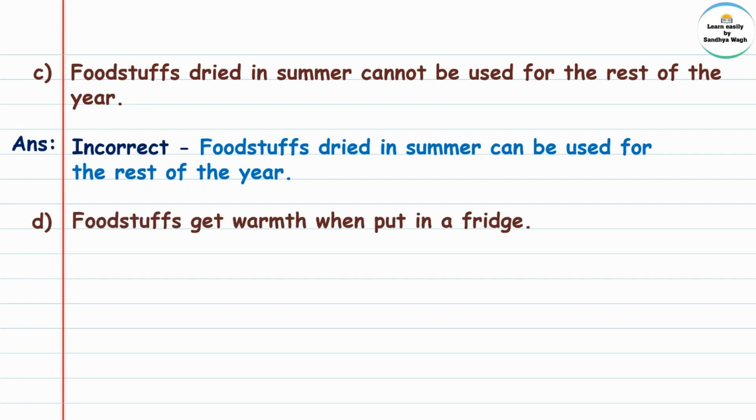Next statement: Foodstuffs get warmth when put in a fridge. This statement is also incorrect. Foodstuffs get cold when put in a fridge. When they become cold, they don't get spoiled.